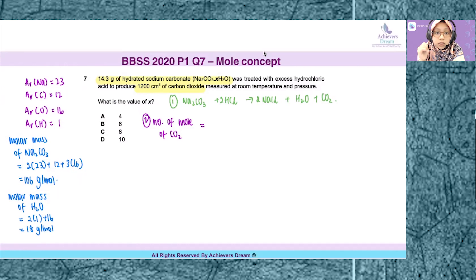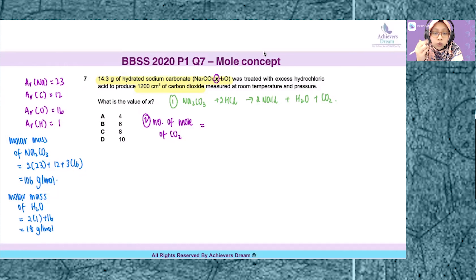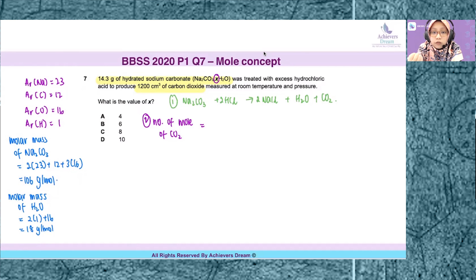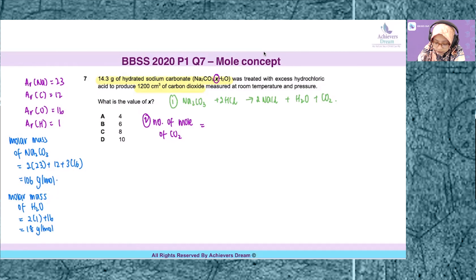This is because of the unknown value of water molecules in the hydrated salt. If it's unknown, you cannot find the molar mass of the hydrated salt, hence you have to work backwards. Another clue given in the question is the term 'room temperature and pressure'.